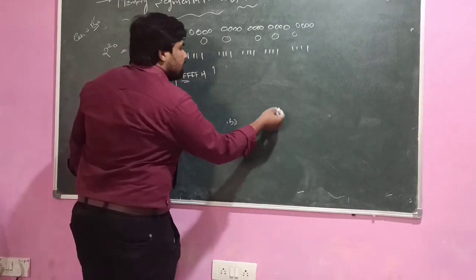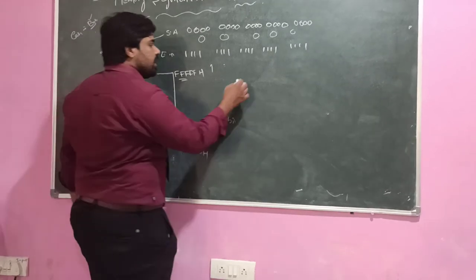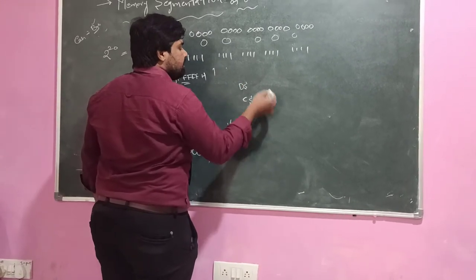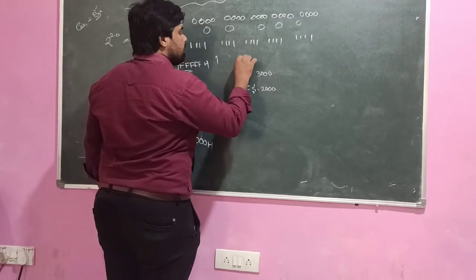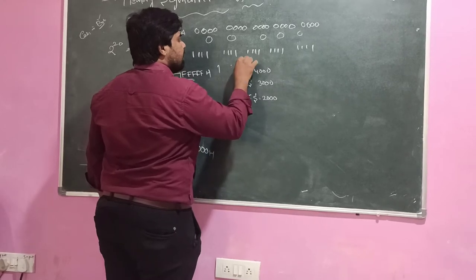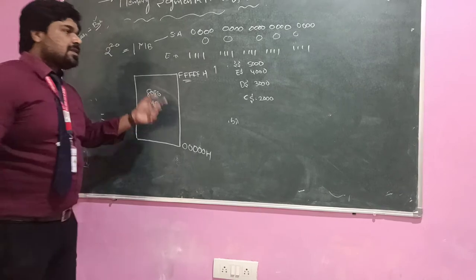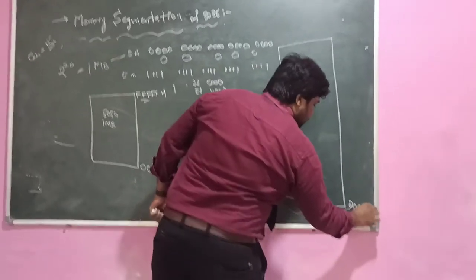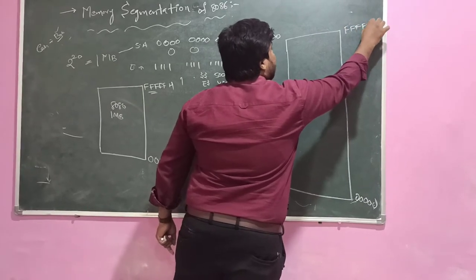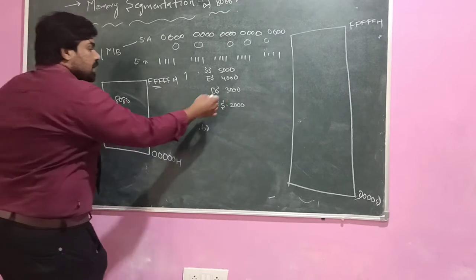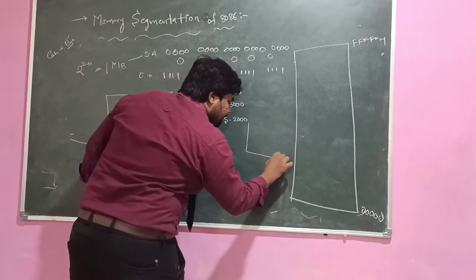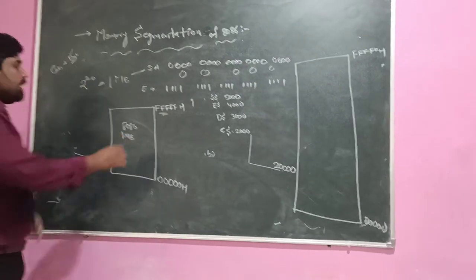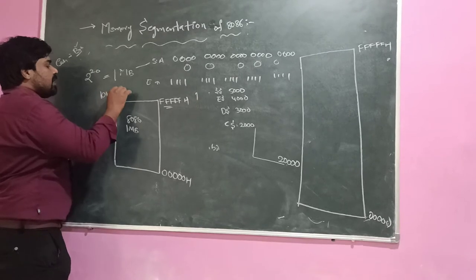Coming to the segmentation part, when we store the starting address of each segment, we store it in the segment register. Suppose the code segment register is 2000, data segment register is 3000, extra segment register is 4000, and stack segment register is 5000. To calculate the 20-bit physical address, we append 0 to the base address — that is multiply by 10H — and add the offset address.